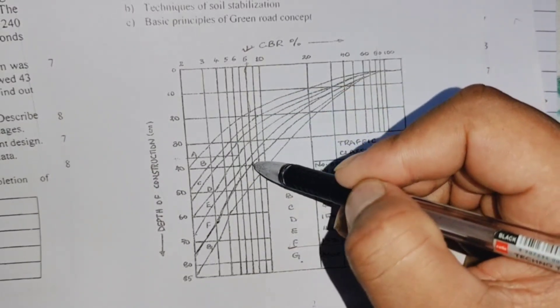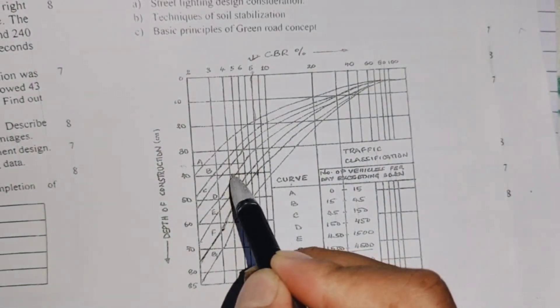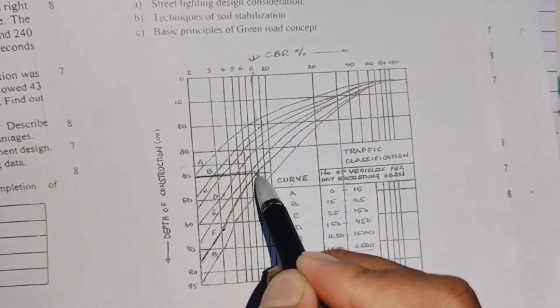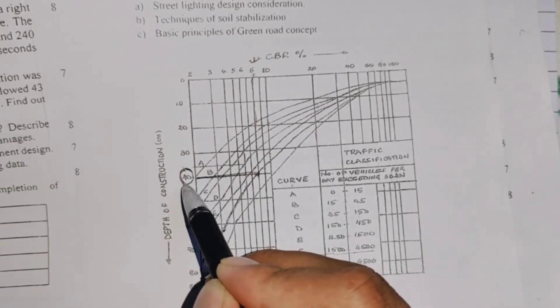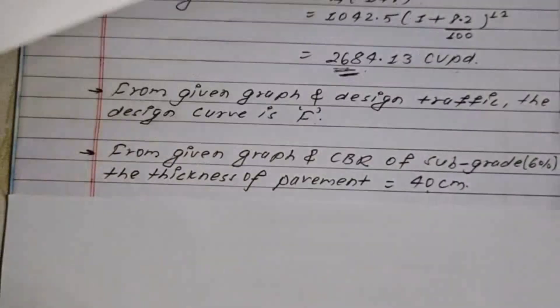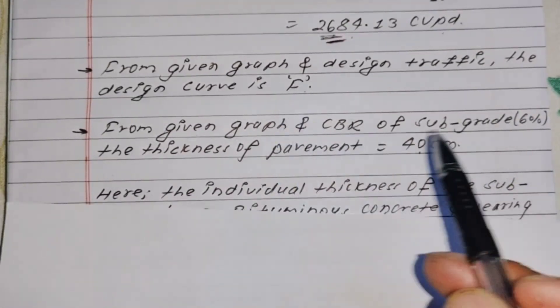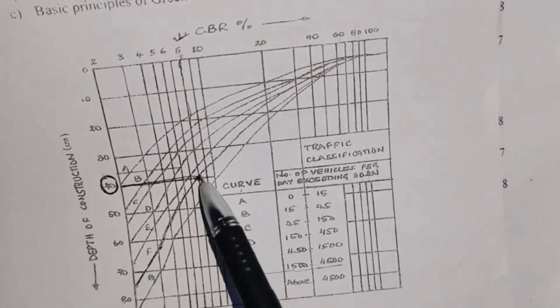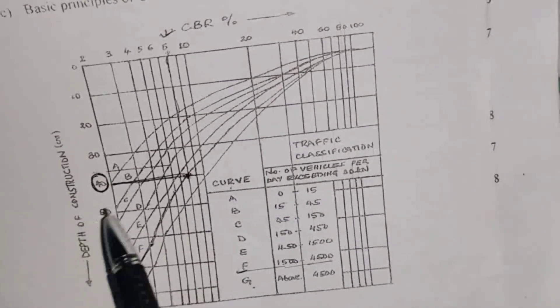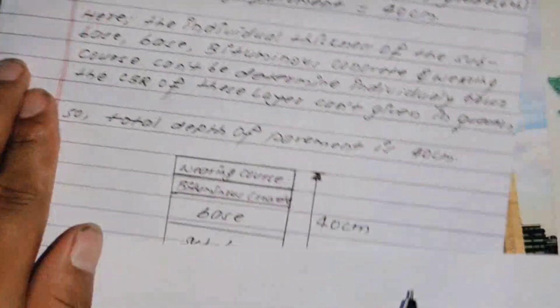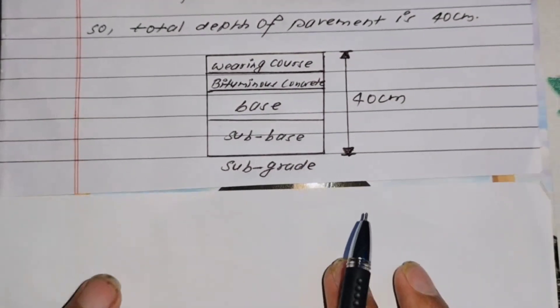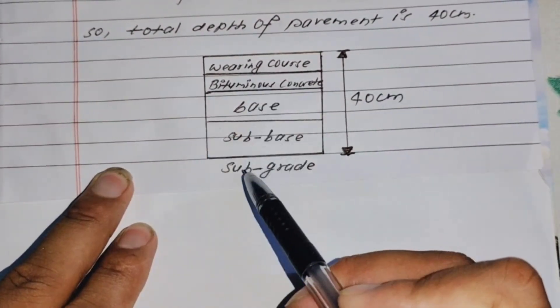Going along the line of intersection on the graph, the original total thickness of the pavement is obtained. The thickness of the pavement comes out to 40 centimeters. So the design total pavement thickness from the CBR graph intersection is 40 cm.